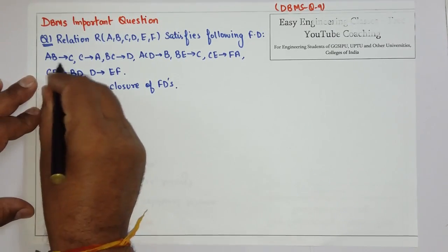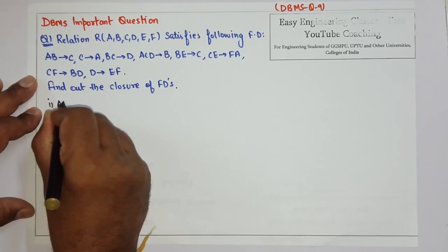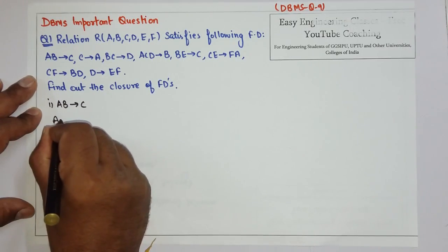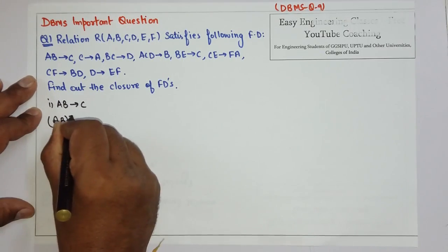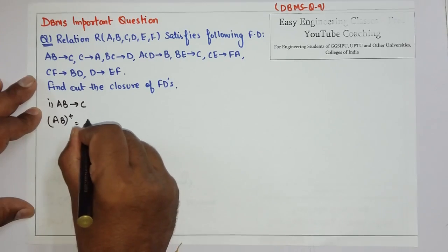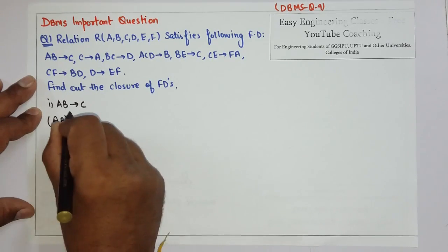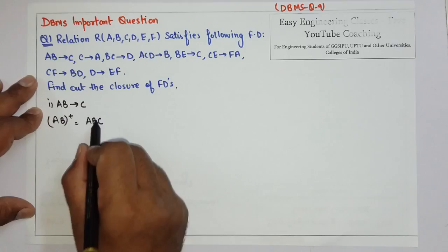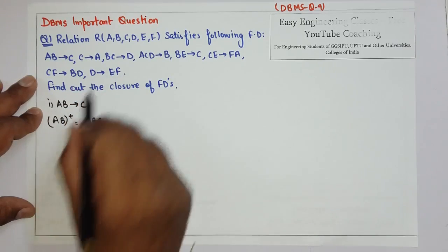First we will find for this FD, AB determines C. So find for AB+, AB plus is equals to AB. Then C from AB to C. Then C, from C I can get A, A is already here.